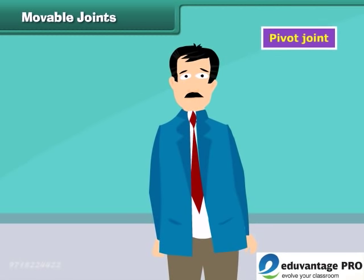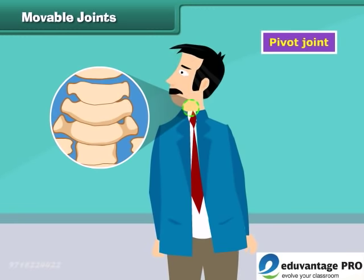Pivot joint: our neck allows us to turn our head on both sides. Have you ever thought about what makes this possible? This is possible because of the pivot joint.